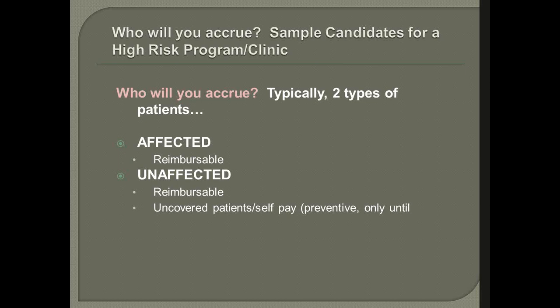Most of what we're going to talk about today are your unaffected patients — how do we go about finding that 90% of patients who will develop breast cancer randomly, and who don't know they have any risk factors they might be able to mitigate? Those are the people we want to identify. Affected patients in a high-risk program are reimbursable. Unaffected are reimbursable too, though some are self-pay and considered preventive care until the patient is actually affected with the disease.